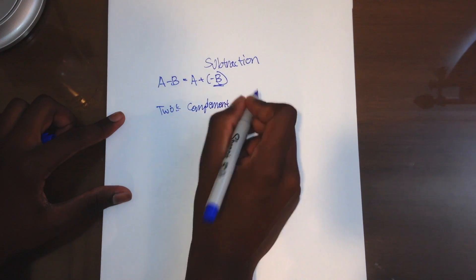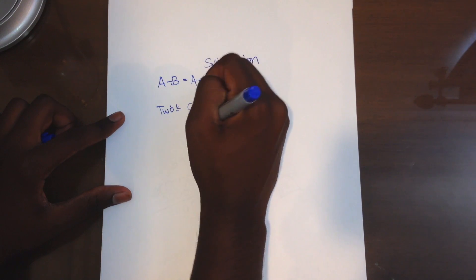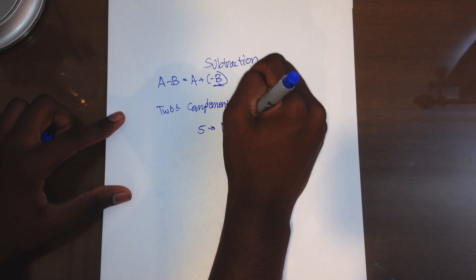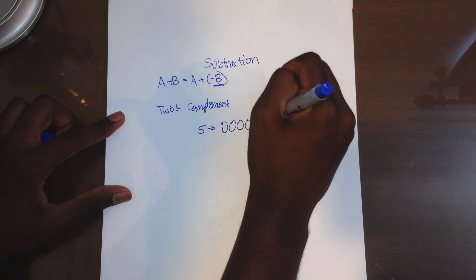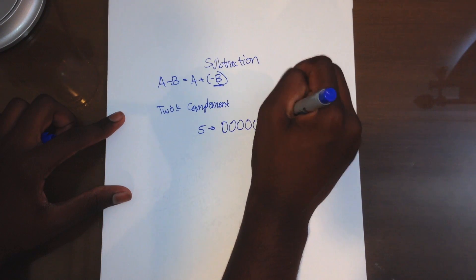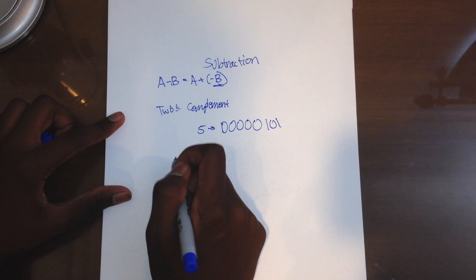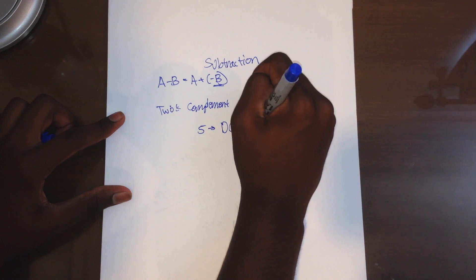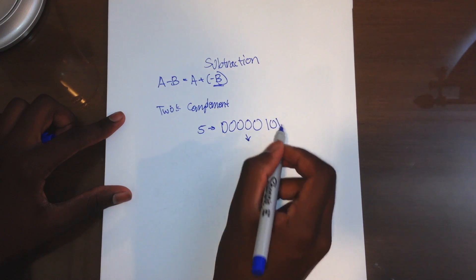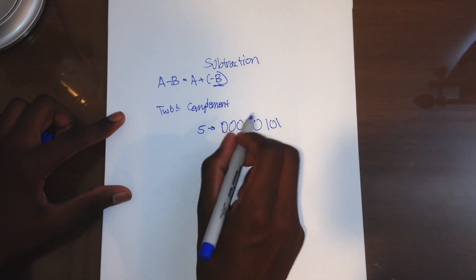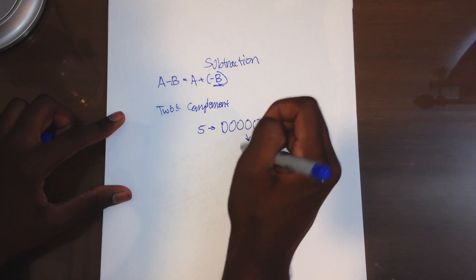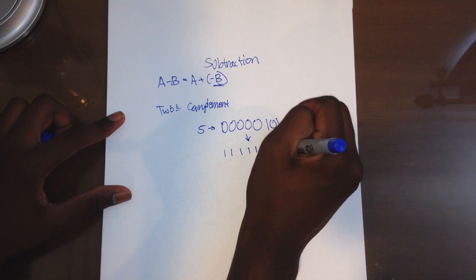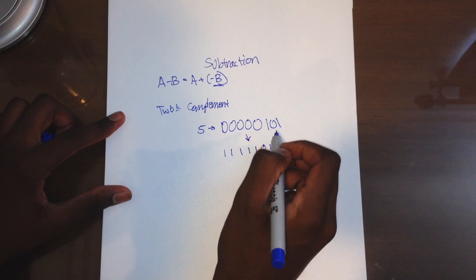This is how the 2's complement works. Take the number 5: 0, 0, 0, 0, 0, 1, 0, 1 — that is the number 5 in binary. To turn the number 5 into negative 5, you inverse every bit — all the 1s go to 0 and all the 0s go to 1. That gives you 1, 1, 1, 1, 1, 0, 1, 0.